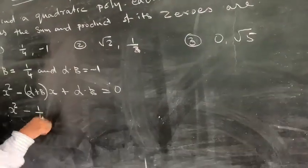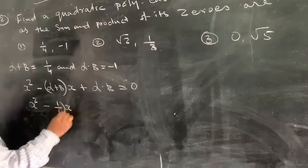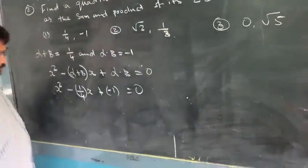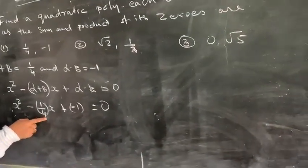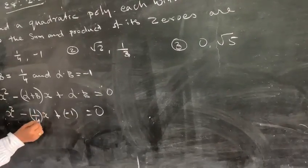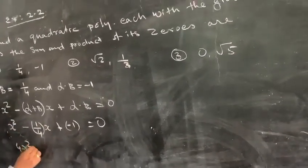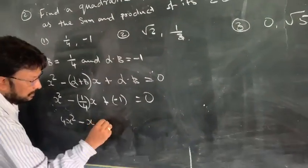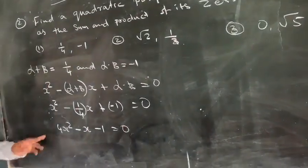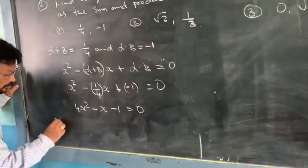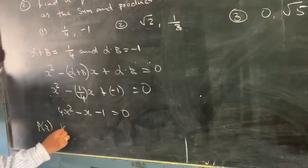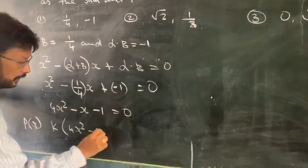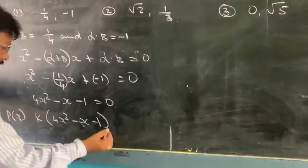The LCM is 4, so multiply both sides by 4: 4 times x squared equals 4x squared, minus 4 times (1/4)x equals minus x, and 4 times minus 1 equals minus 4. So we get 4x squared minus x minus 4 equals 0. We can write this with a constant k: k(4x squared minus x minus 1) equals 0.